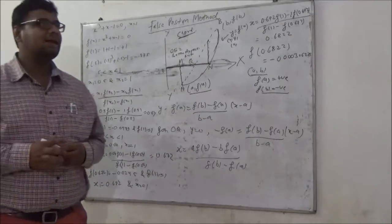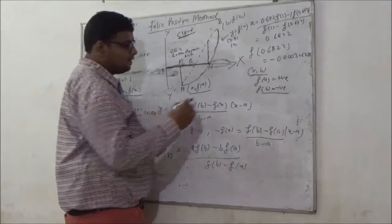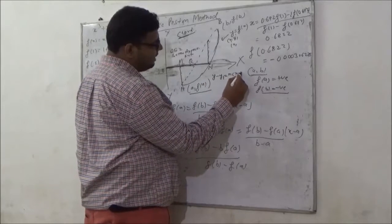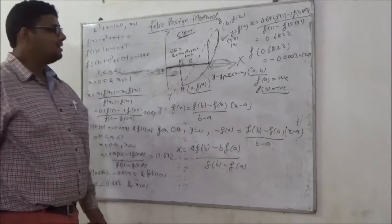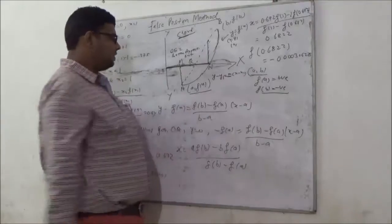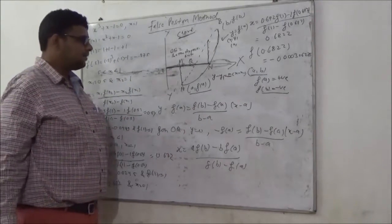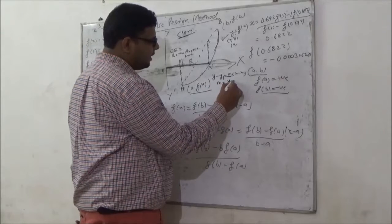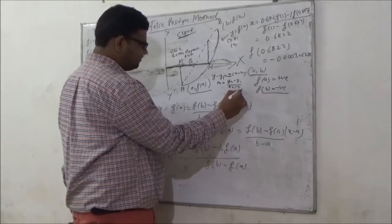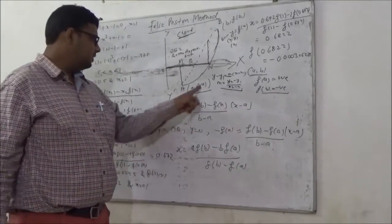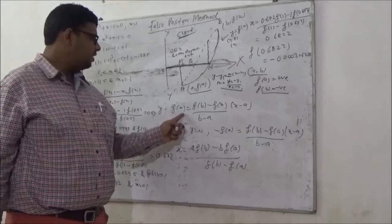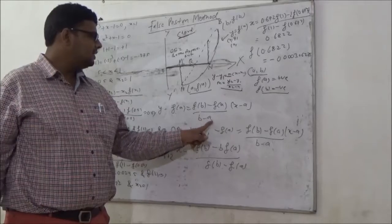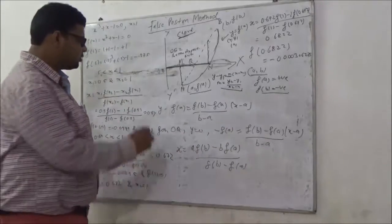The equation of a straight line passing through two points is: y minus y1 equals m times (x minus x1), where m is the slope of the chord, and (x1, y1) is the point at a. The slope m equals (y2 minus y1) divided by (x2 minus x1). So the equation becomes: y minus f(a) equals [f(b) minus f(a)] divided by [b minus a], multiplied by (x minus a).